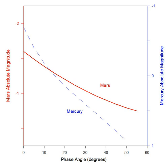The phase curve of Mercury is very steep, which is characteristic of a body on which bare regolith is exposed to view. At phase angles exceeding 90 degrees the brightness falls off especially sharply. The shape of the phase curve indicates a mean slope on the surface of Mercury of about 16 degrees, which is slightly smoother than that of the Moon.